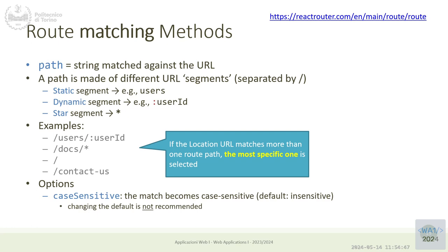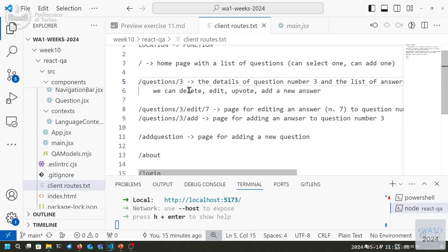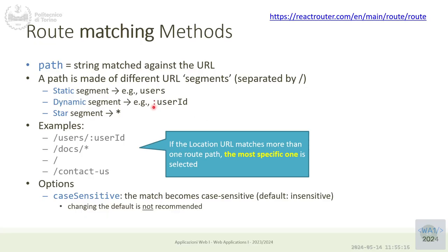The matching rules use a simplified pattern matching — not regular expressions. A location is made of different segments and every segment can be a static segment (just a constant string), a dynamic segment or parameter substituted by a value using the colon syntax, or a star segment that matches anything from that point forward.